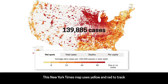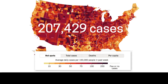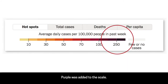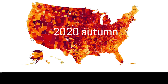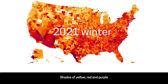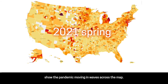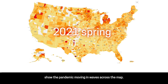This New York Times map uses yellow and red to track COVID-19 hotspots in the US. Just a month later, the cases were much higher, and purple was added to the scale. Shades of yellow, red, and purple show the pandemic moving in waves across the map.